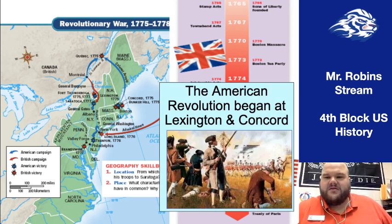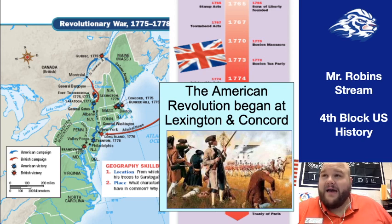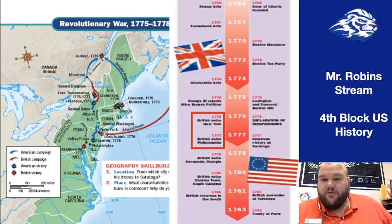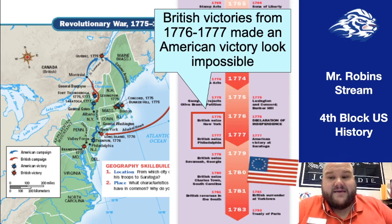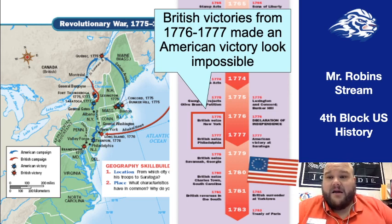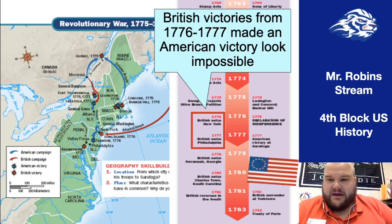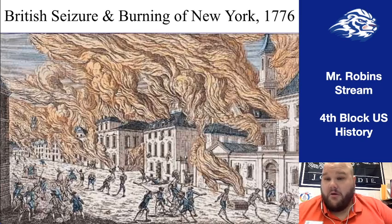The war began at Lexington and Concord in April 1775, where militias met the British Redcoats. Generally speaking, 1776 and 1777 were not good years for the Americans — it seemed like they were fighting a losing war, as they lost both New York and Philadelphia, two of the biggest colonial cities in all 13 colonies. When the British took New York, they famously burned most of it down, and they would continue to occupy New York City until the end of the war despite American efforts to drive them out.